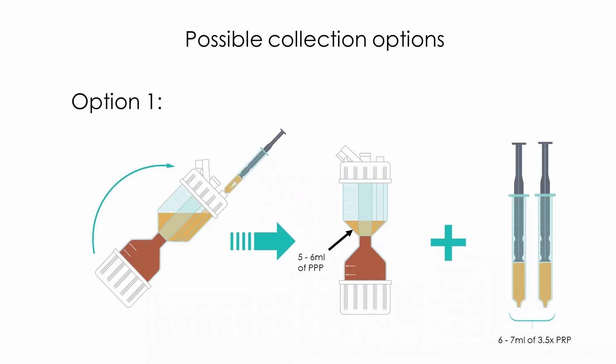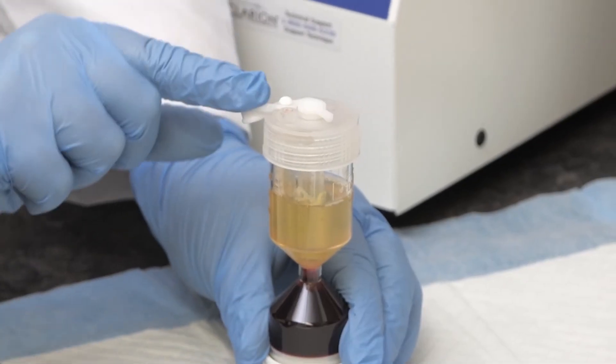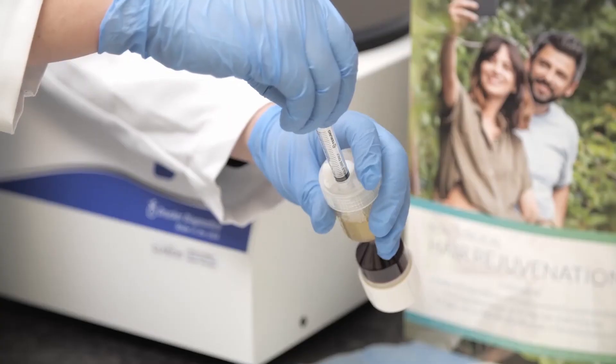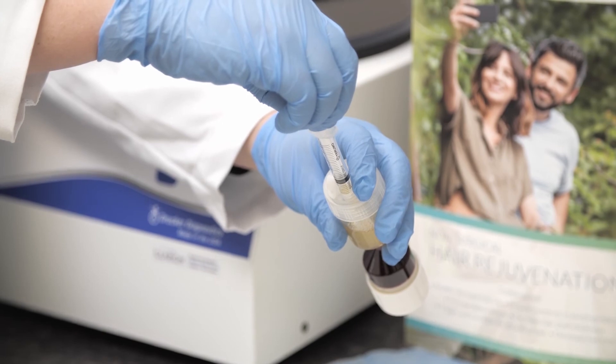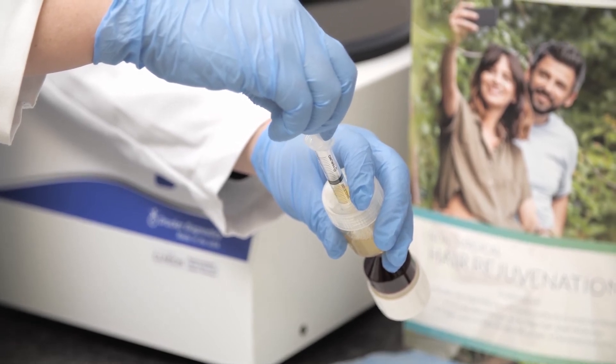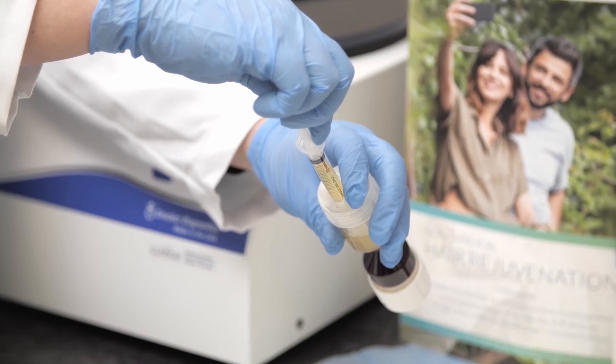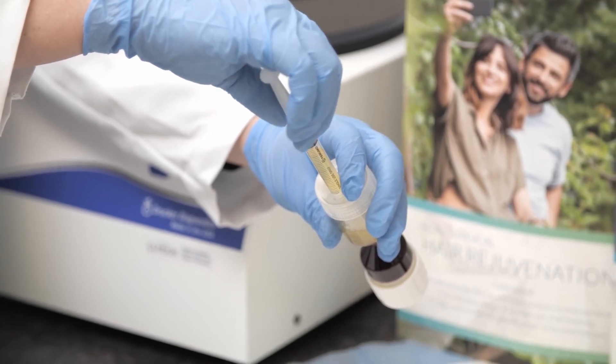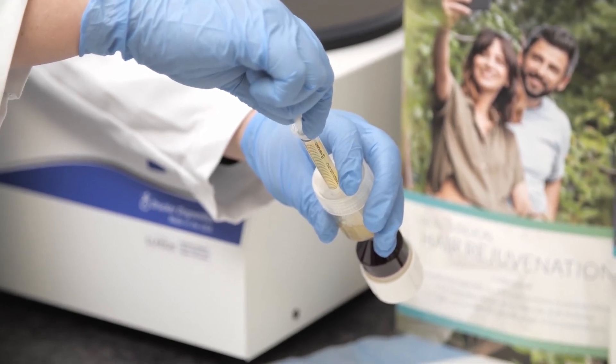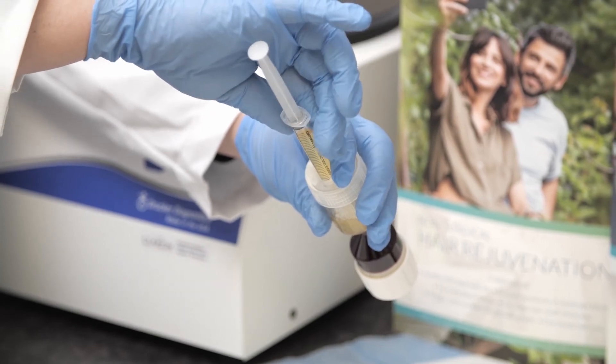Possible collection options. Option one for a 3.5 times concentration with roughly 6 to 7 mls of PRP: immediately after sealing the red blood cells in the bottom chamber tilt the hourglass towards you at a 45 degree angle with the outer port at six o'clock position and aspirate half the contents. The aspirated contents are the platelet rich plasma and buffy coat. This will leave the platelet poor plasma in the hourglass.